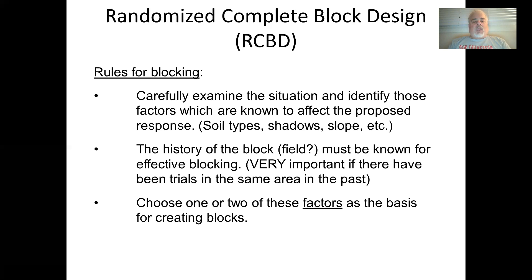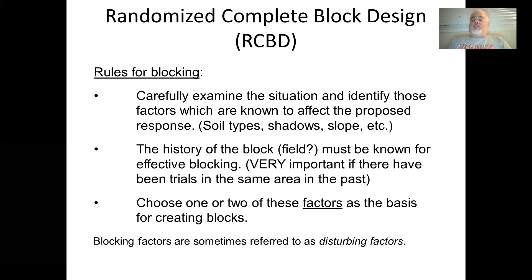You generally want to choose one blocking factor, and if you have two factors, hopefully they run parallel to each other. If two factors run perpendicular to each other, you need a good statistician — or just go to another field if you can. Blocking factors are sometimes called disturbing factors — those environmental variances you're trying to avoid: moisture gradients, slopes, sun exposure, shadows from nearby trees, soil type differences. Outside of grad school, I've mostly heard the term 'blocking factors' rather than 'disturbing factors,' at least in the ag industry.